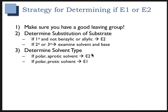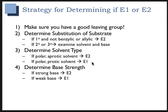Then you're going to look at the solvent type. A polar aprotic solvent is going to promote E2. A polar protic solvent is going to promote E1. You'll also look at the base strength — a strong base will be an E2 reaction, and a weak base will be E1.